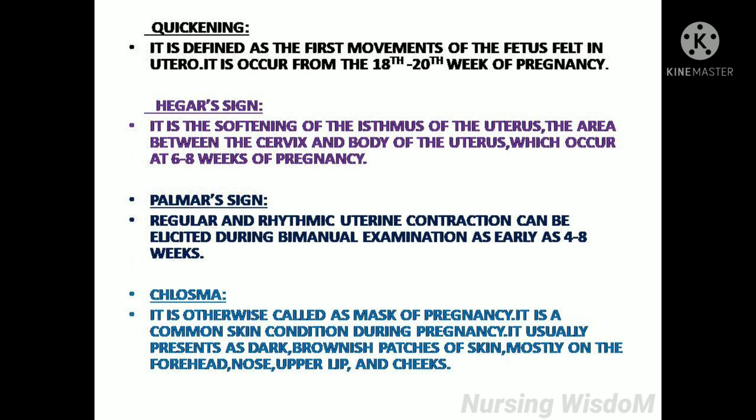Quickening is defined as the first movement of the fetus felt in utero, occurring from the 18th to 20th week of pregnancy. Hegar's sign is softening of the isthmus of the uterus — the area between the cervix and body of the uterus — occurring at 6 to 8 weeks. Palmer sign refers to regular and rhythmic uterine contractions elicited during bimanual examination as early as 4 to 8 weeks.